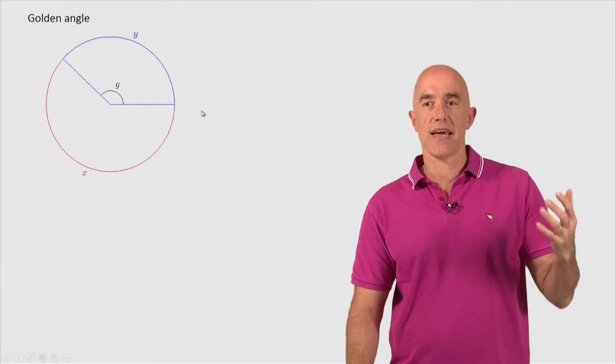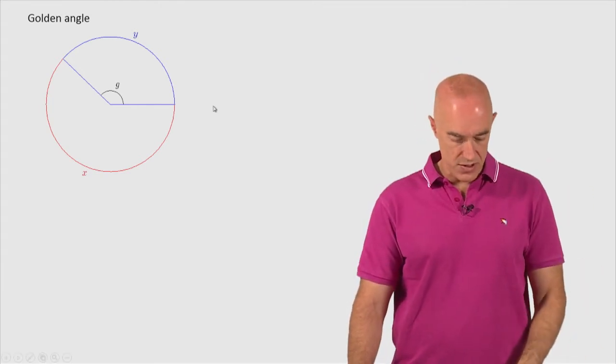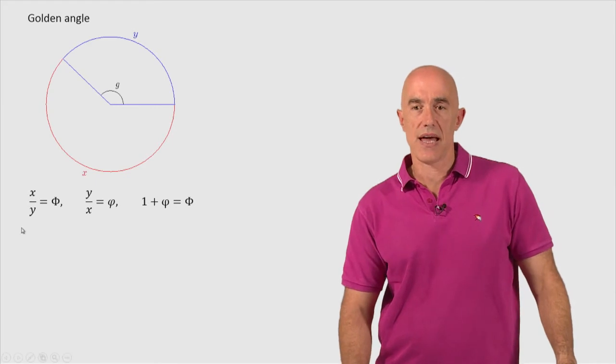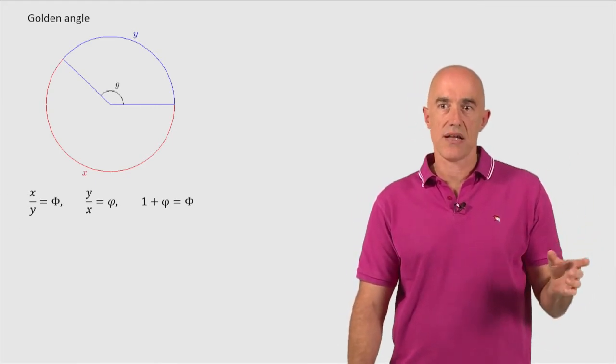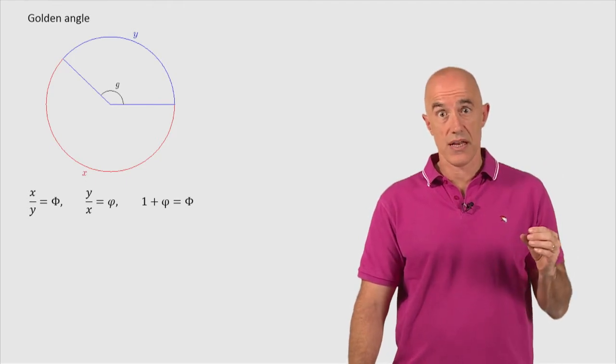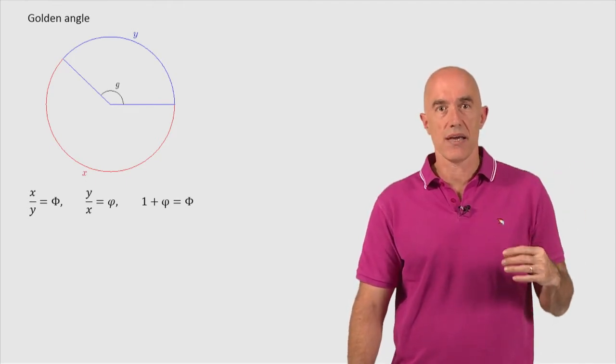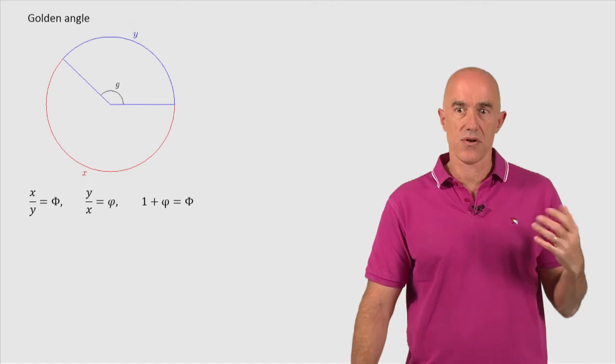So what does that say if x and y are in the golden ratio? It means that x divided by y—x is the larger arc length, y is the smaller arc length—x divided by y is equal to capital Phi, the golden ratio.